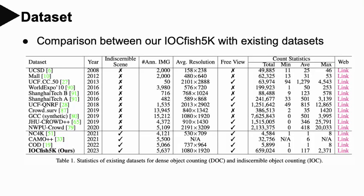This is the comparison between the proposed dataset and existing ones. First, IOC Fish 5K is the largest-scale object counting dataset for indiscernible scenes in terms of size, image resolution, and the number of annotated points. Second, IOC Fish 5K has a high density of images, making it currently the most challenging benchmark. Third, although IOC Fish 5K is specifically proposed for IOC, it has advantages over existing dense object counting datasets. Last, IOC Fish 5K focuses on underwater scenes with sea animal annotations, which makes it different from all existing datasets.